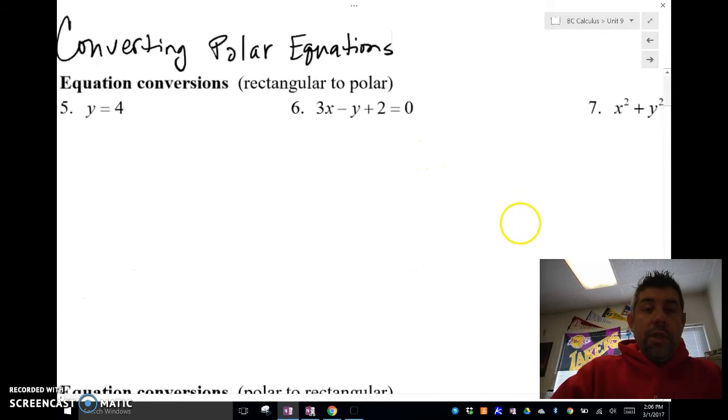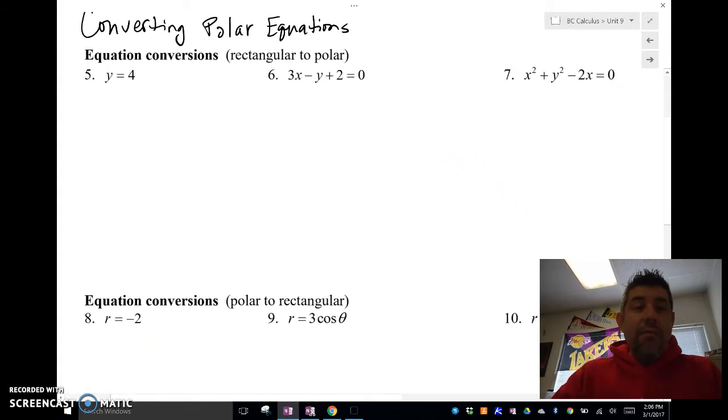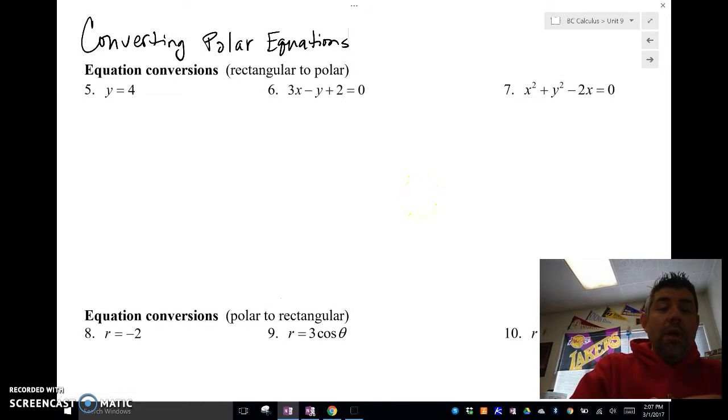We're going to take a look at about six examples. The first one we have is y = 4. So y is r cosine theta, so I'm going to make that substitution here.